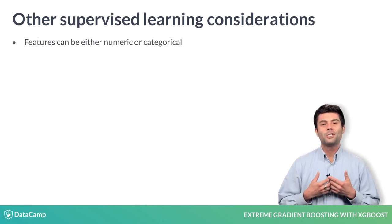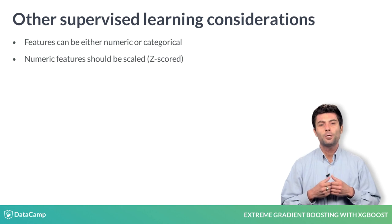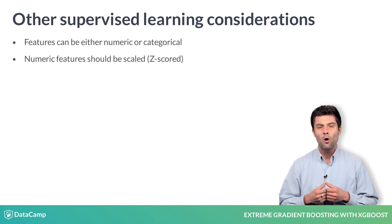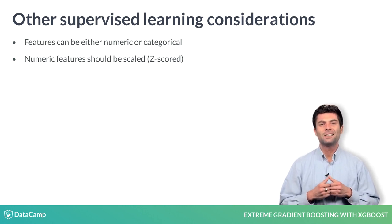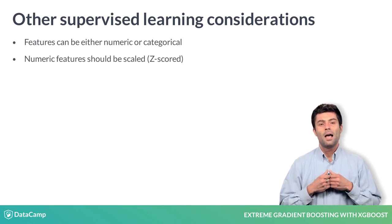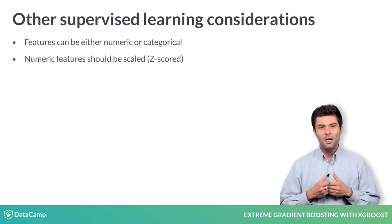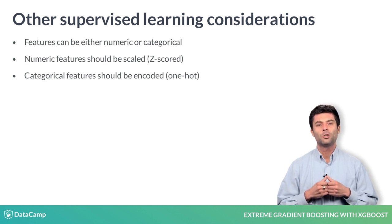Furthermore, it's usually the case that numeric features are scaled to aid in either feature interpretation or to ensure that the model can be trained properly. For example, numerical feature scaling is essential to ensure properly trained support vector machine models. Categorical features are also almost always encoded before applying supervised learning algorithms, most commonly using one-hot encoding.